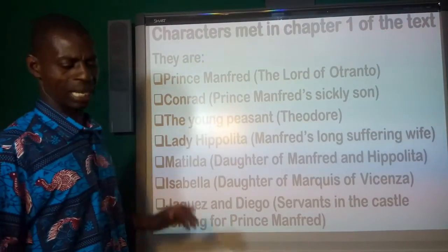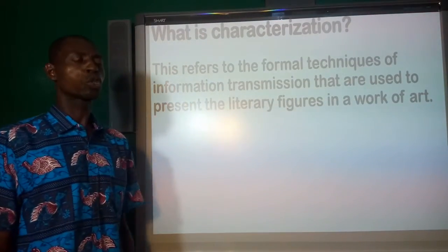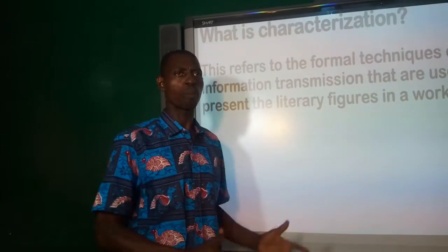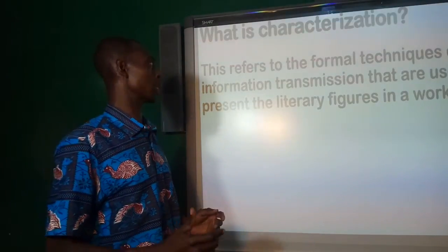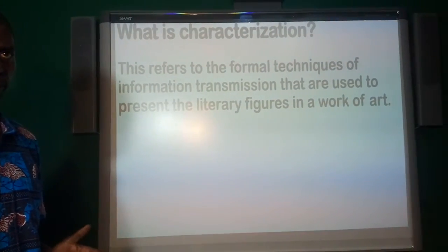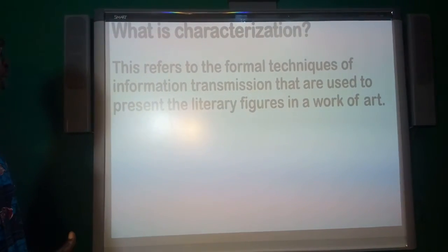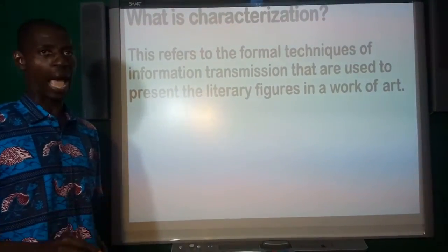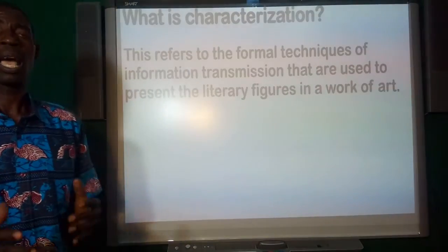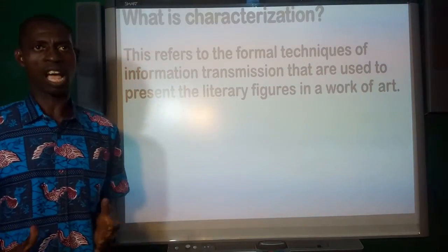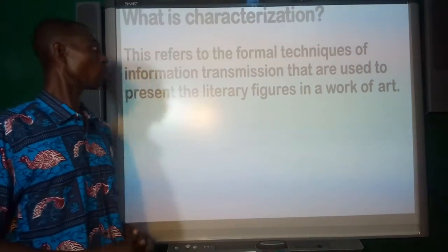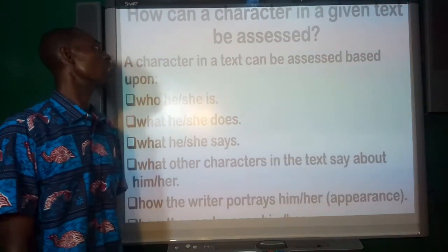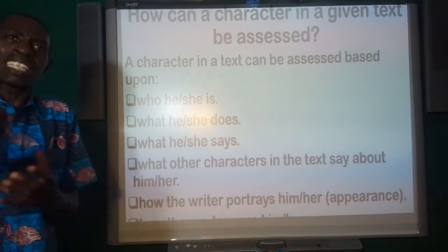Our focus now is to know how these characters are presented by our writer, Walpole, in the text. We are going to look at characterisation. This refers to the formal techniques of information transmission that are used to present the literary figures in the work of art. Every writer, every author, has a way of presenting his people — his characters — in a given text. So we are going to look at how characters are presented and how a character in a given text can be assessed.